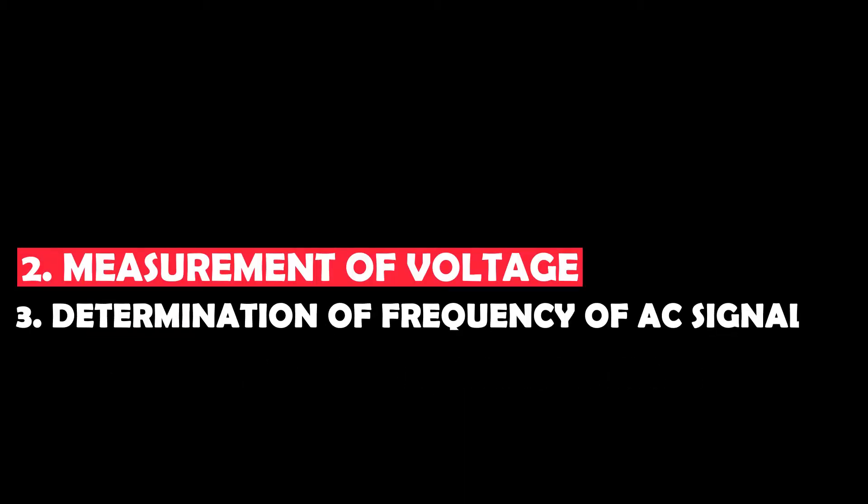A cathode ray oscilloscope can be used in a variety of applications, such as observation of waveforms, measurement of voltage, and the determination of frequency of alternating current signals, that is AC signals.